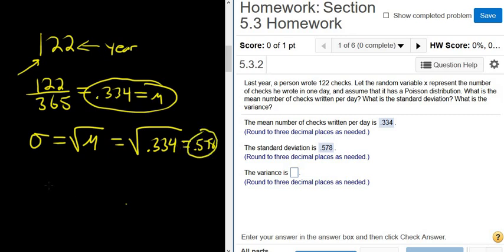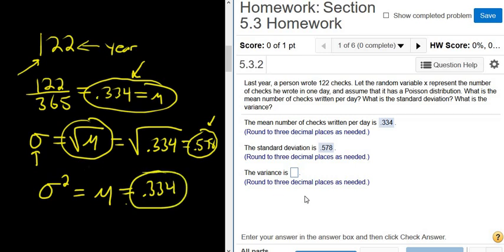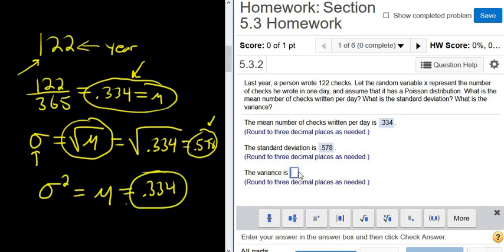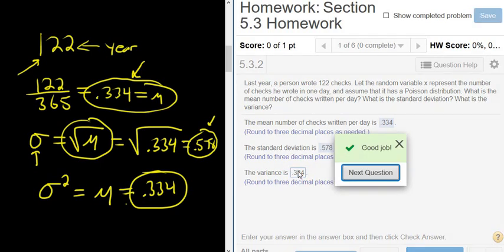And the variance, well, that's sigma squared. So basically, we just square this number. But really, the formula for the variance was if you square this number, you get sigma squared. You square this, the mean goes away. You just get mu, which we already know is here. So it's the same. The variance is equal to the mean for the Poisson distribution. Really creepy stuff. 0.334. And that's it. Hope that made sense.